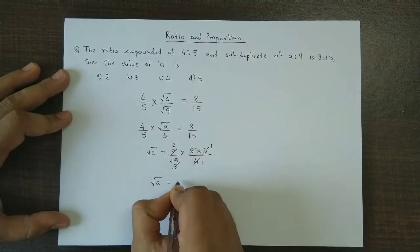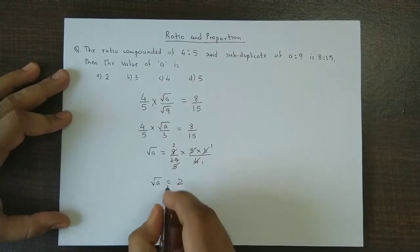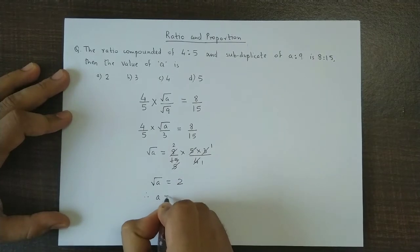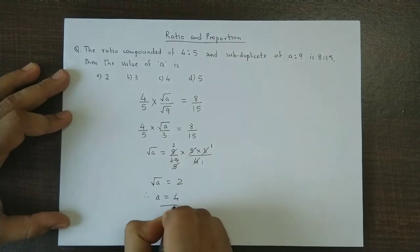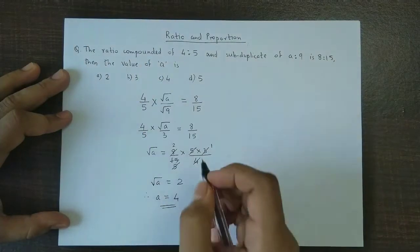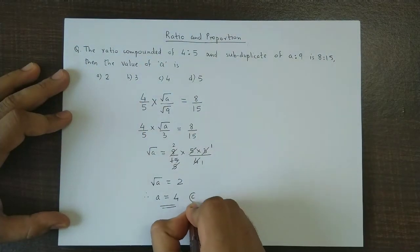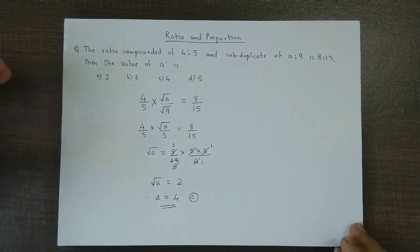If we square both sides, a = 4. The answer to this question is option C.